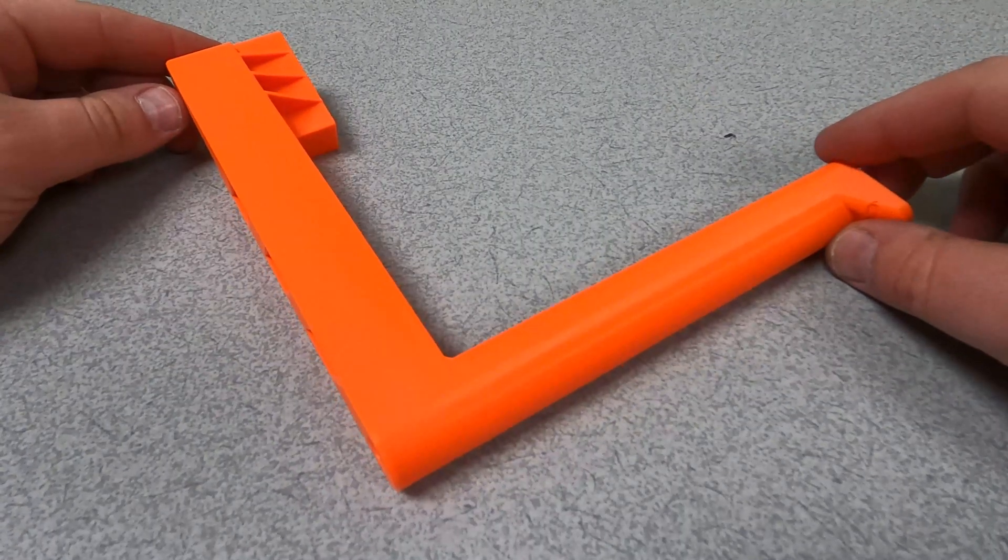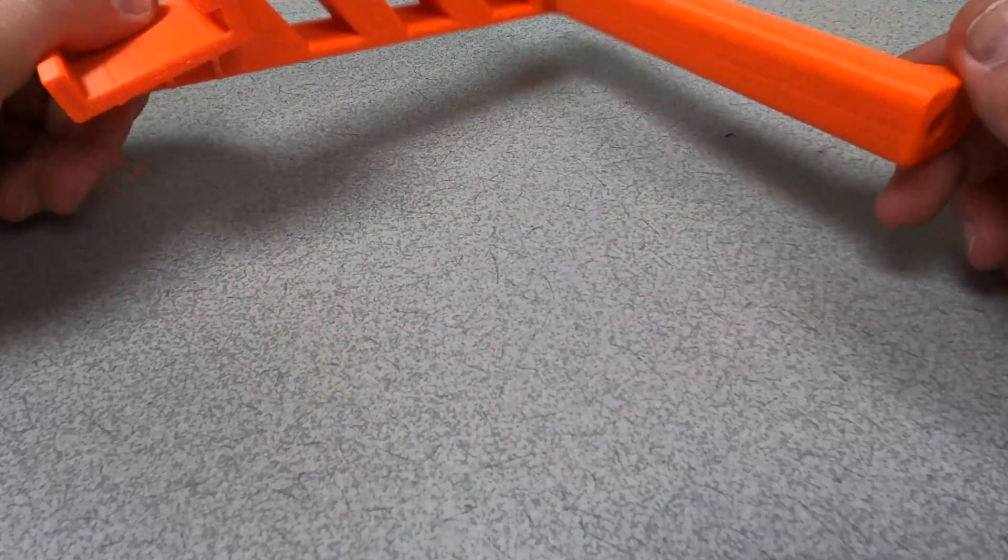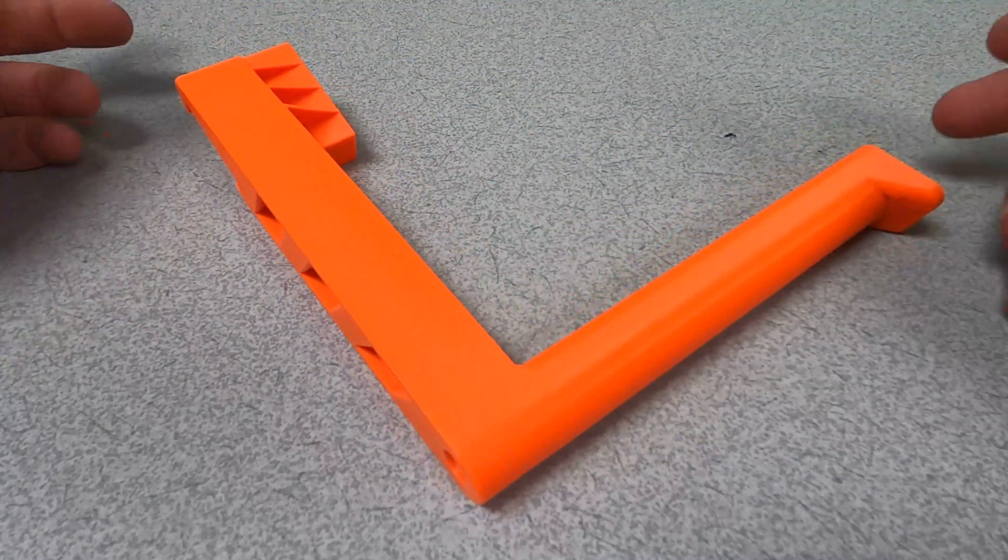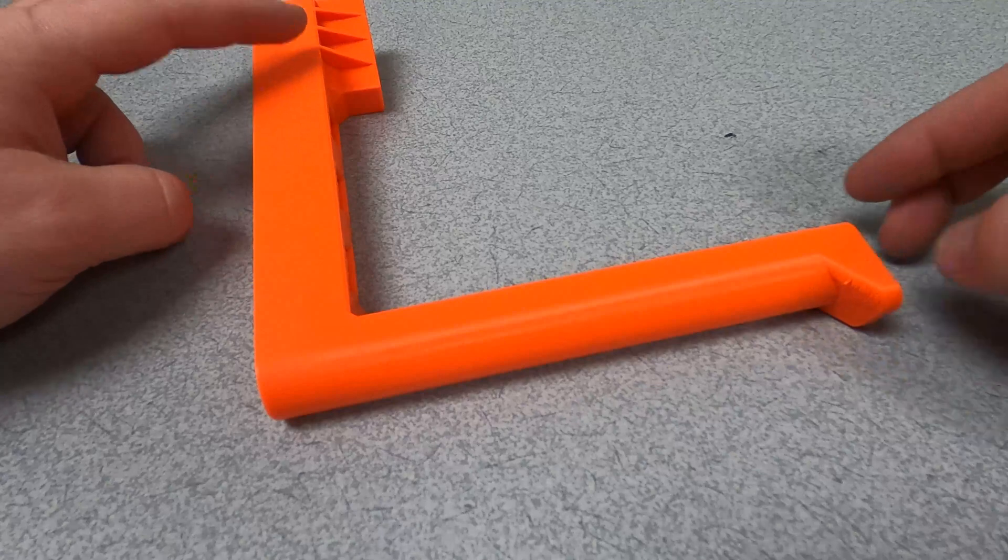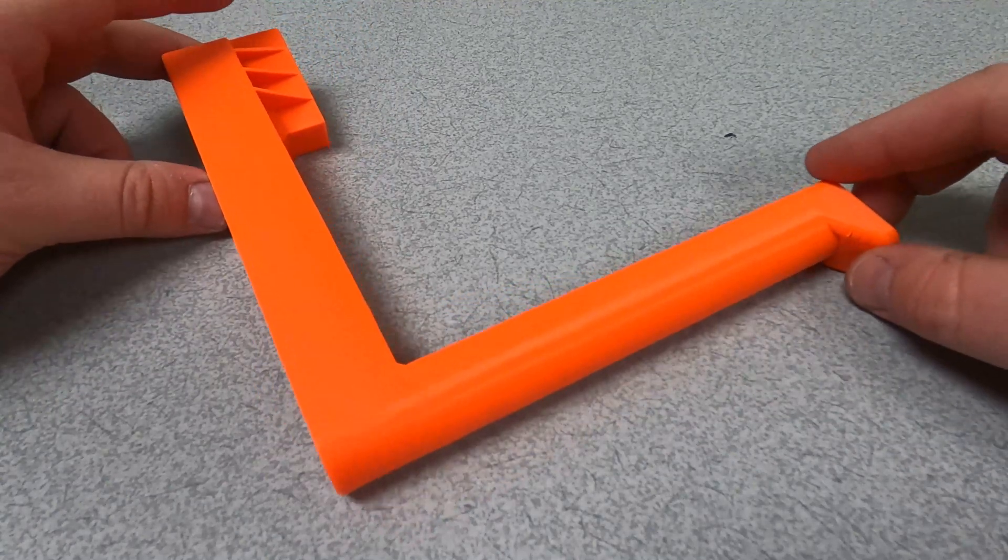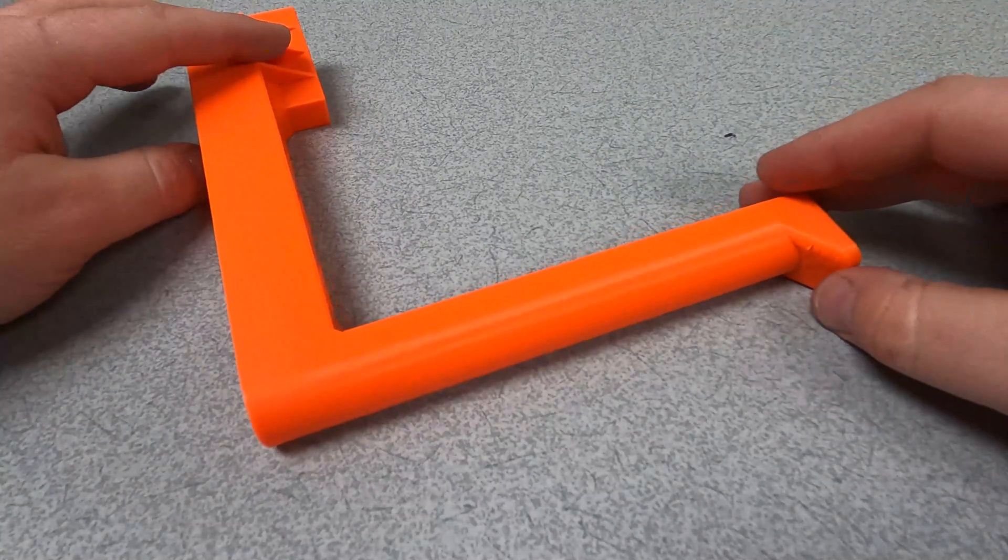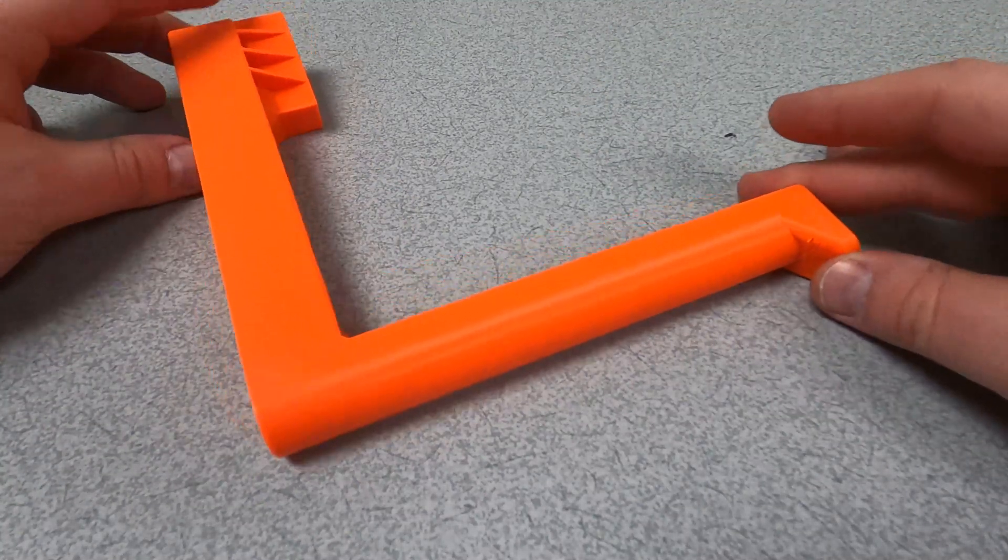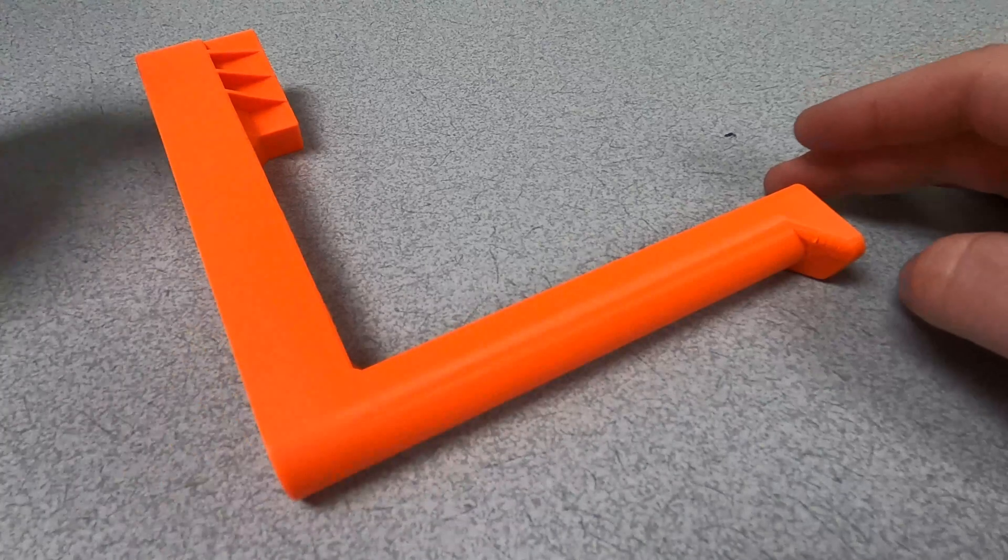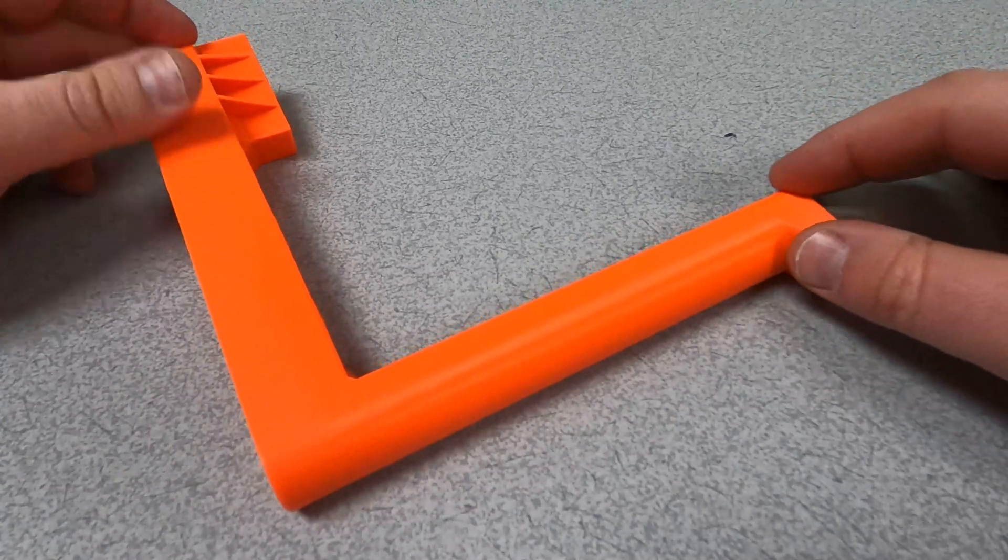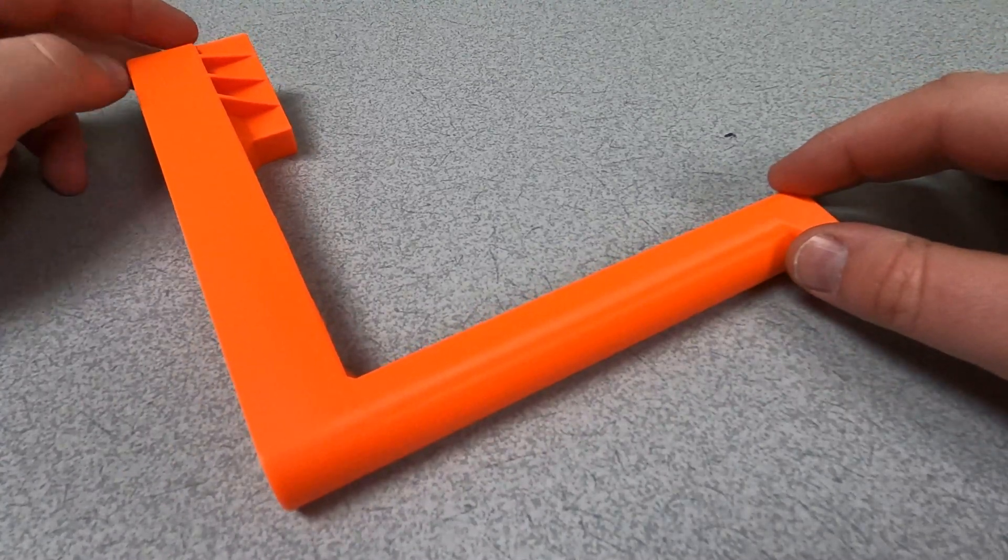The only other thing you had to do with these spools was you had to print out one of these. It is a spool reel holder thing that actually carries the larger spools because they are a lot wider. They will fall off the one that comes with the Prusa printer.